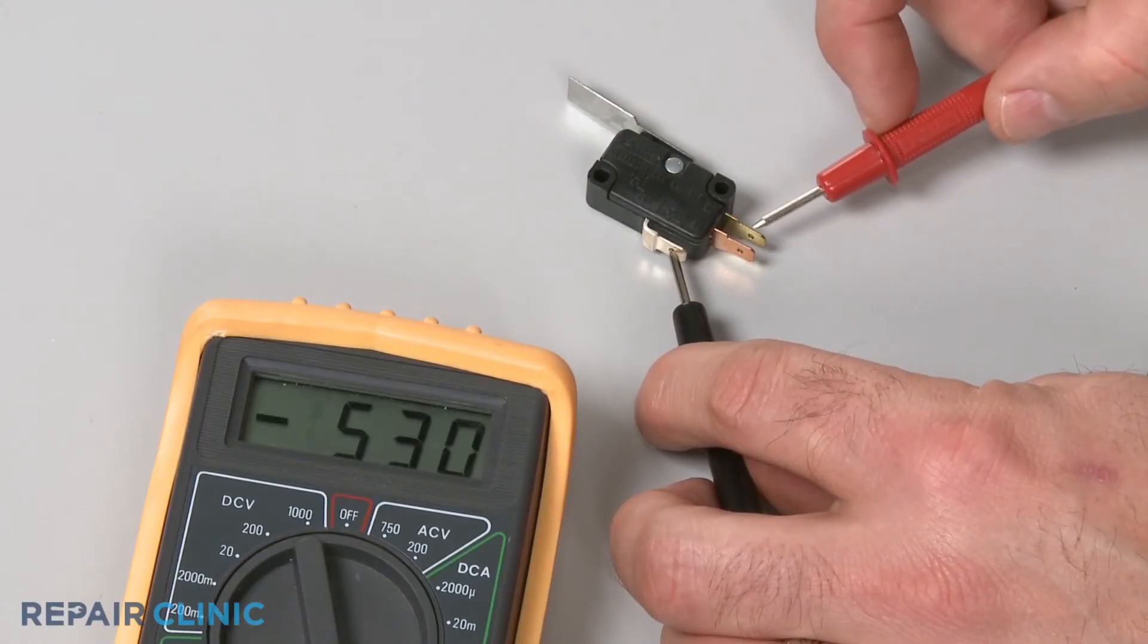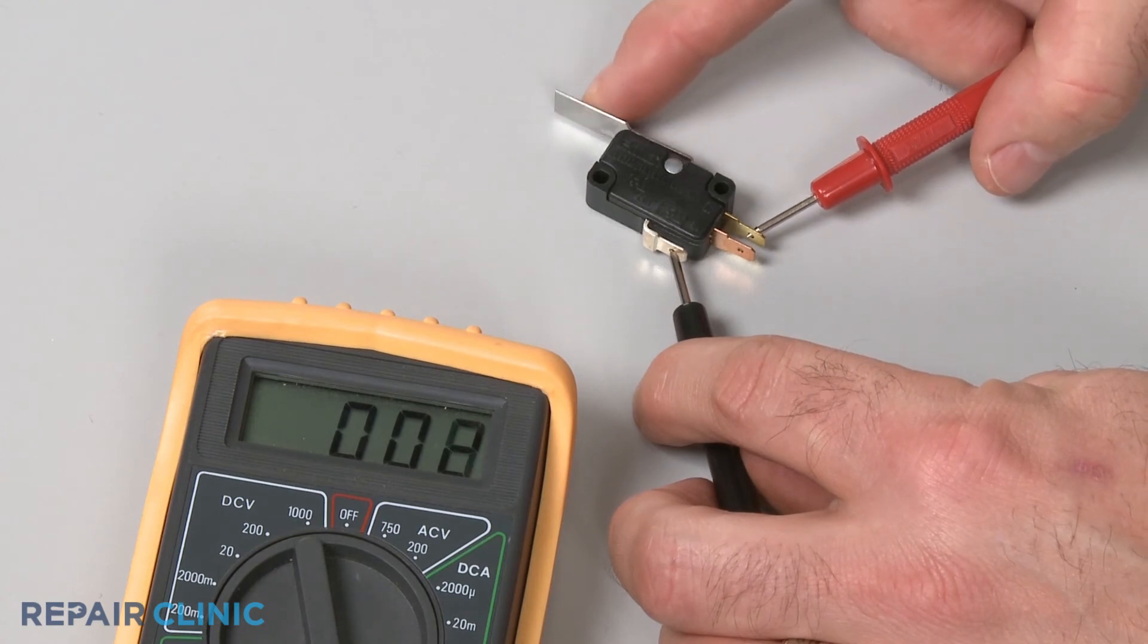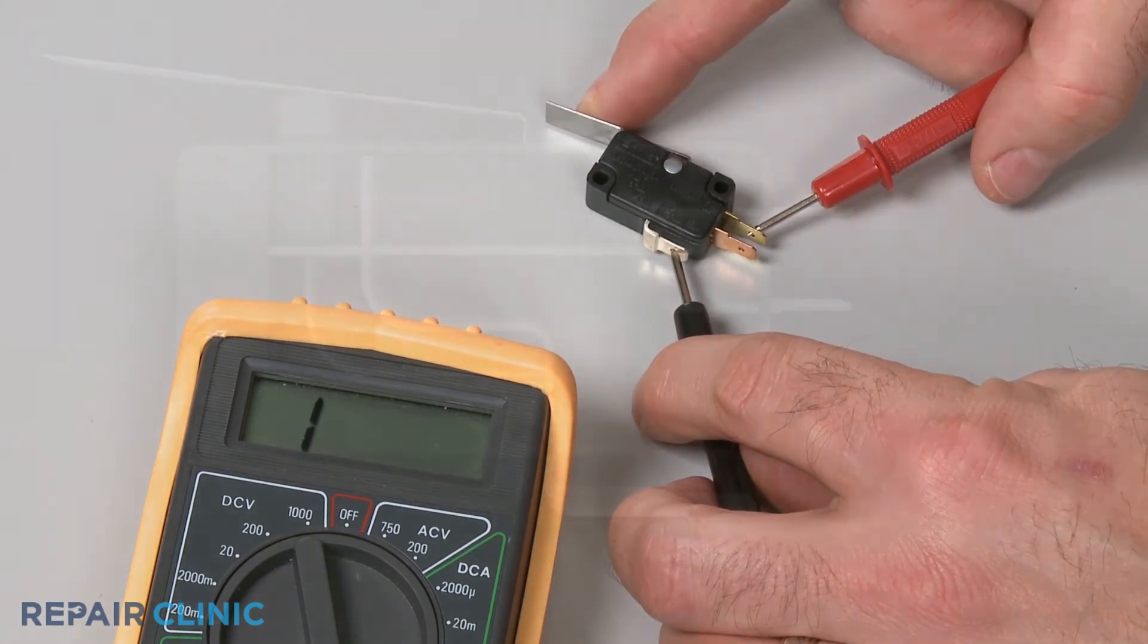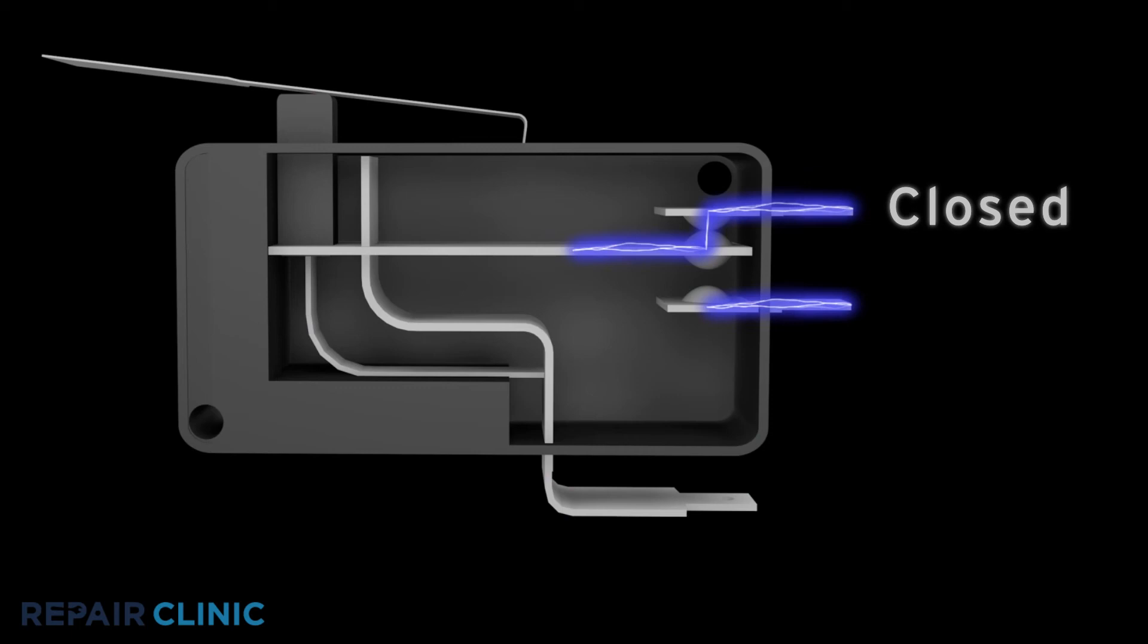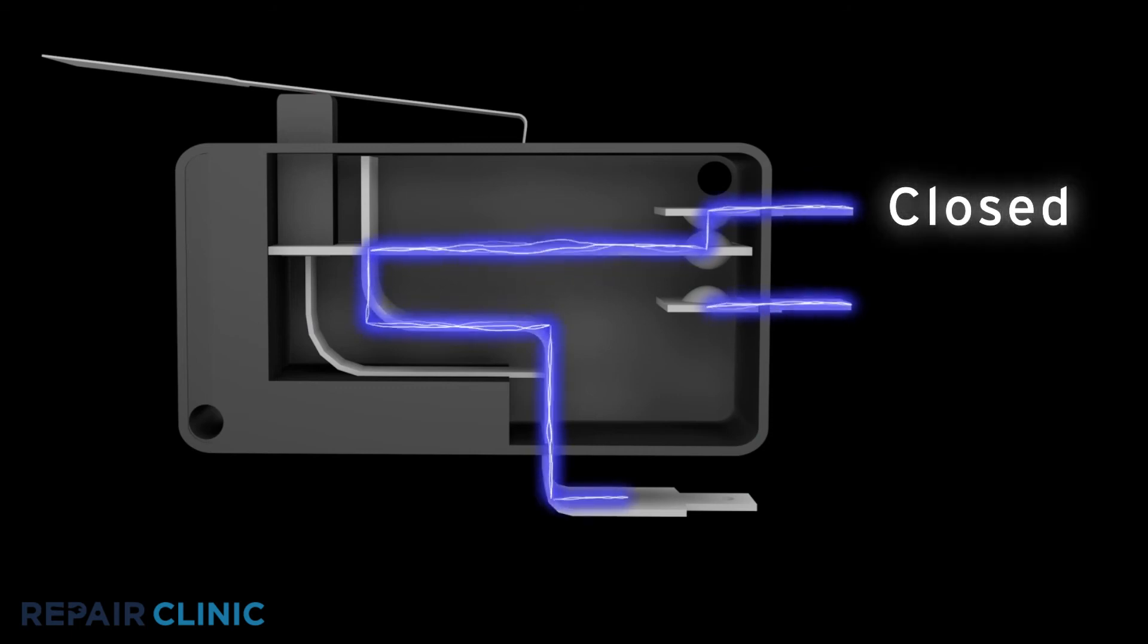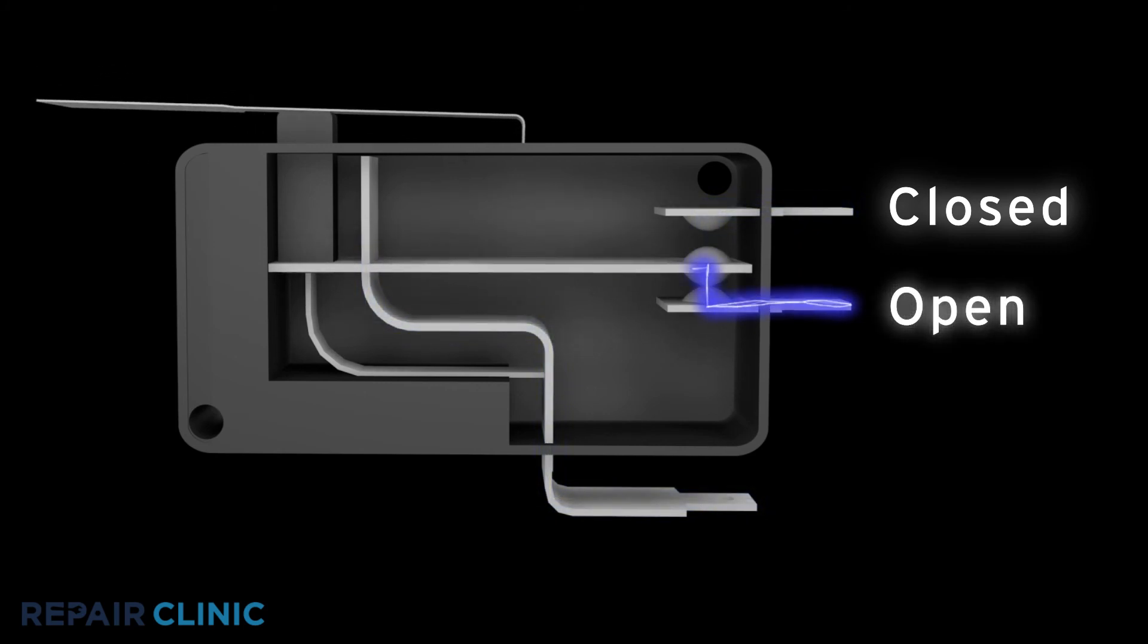Repeat the test for the normally closed terminal to determine if it has continuity. Keep in mind that the normally closed terminal should only provide continuity before the switch has been actuated. Likewise, the normally open terminal should only provide continuity after the switch has been actuated.